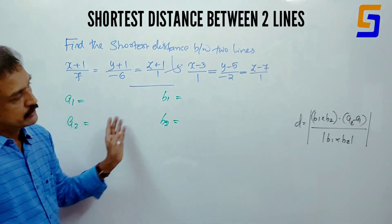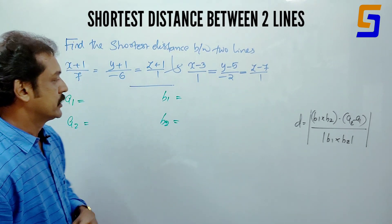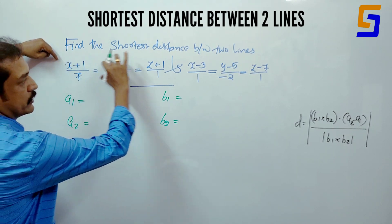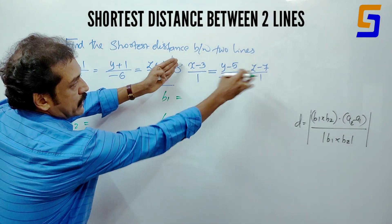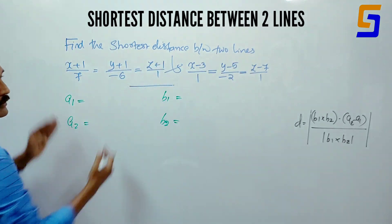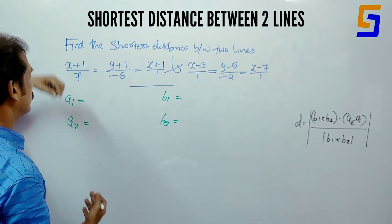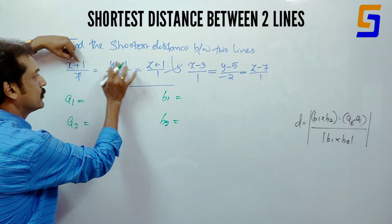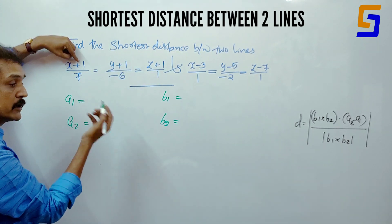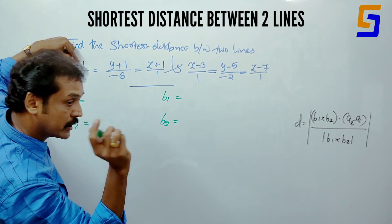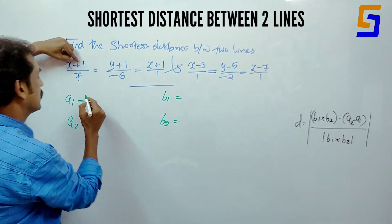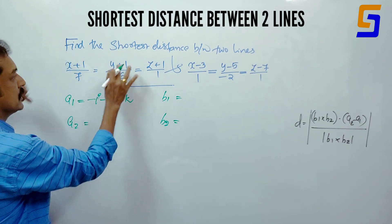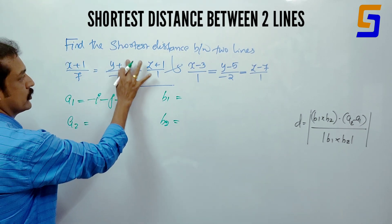Let's write the vectors. The signs give us: plus 1, plus 1, plus 1 and minus 1, minus 1, minus 1. These correspond to ijk, meaning minus i, minus j, minus k.